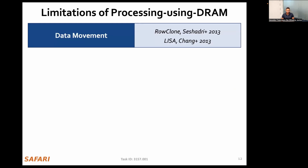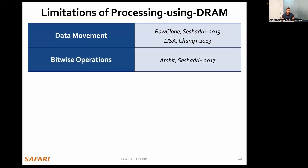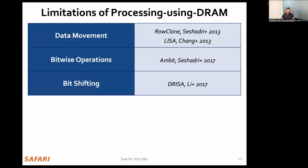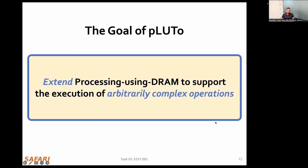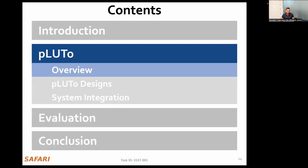While the processing-using-DRAM approach often provides the highest throughput and energy efficiency, the range of operations that these architectures support is very limited — restricted to data movement, bitwise operations, shifting operations, and arithmetic operations. This limits the potential of processing-using-memory architectures for a broad set of applications and application domains. Therefore, our goal in this work is to extend processing using DRAM to support execution of arbitrary complex operations.